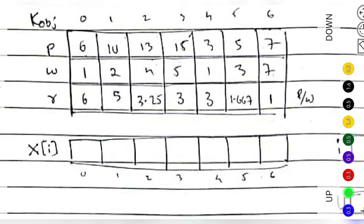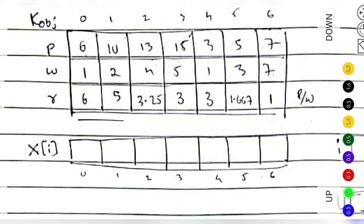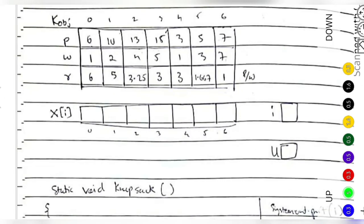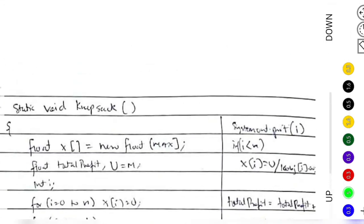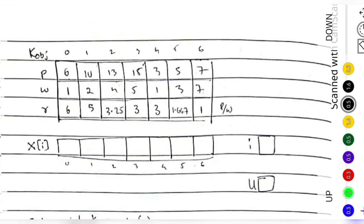For 1 kilogram the profit is 6, so I write 6 here. For this one — 2 kilograms at 10 dollars — for 1 kilogram it will be 5, so I write 5. I've done the same for all objects. These are the ratios, and they're very important for this problem. We initialize the x array for storing ratios and set u equal to m, the capacity, which is 15.